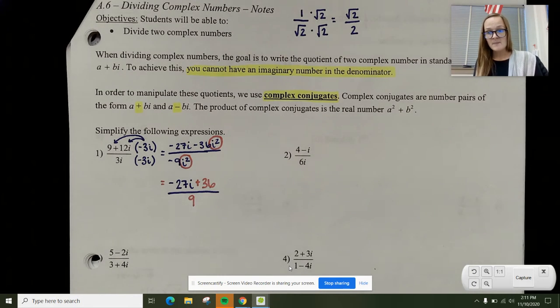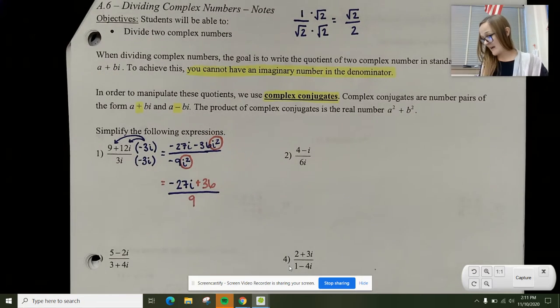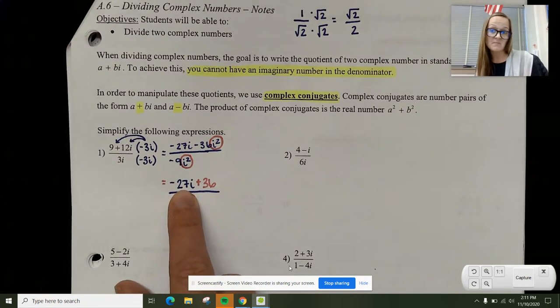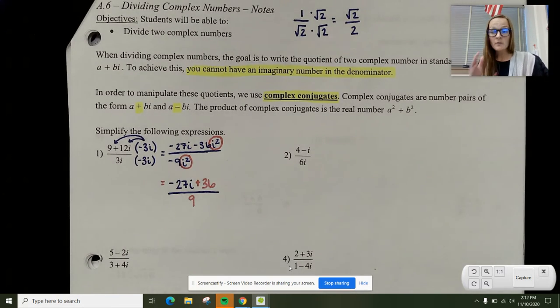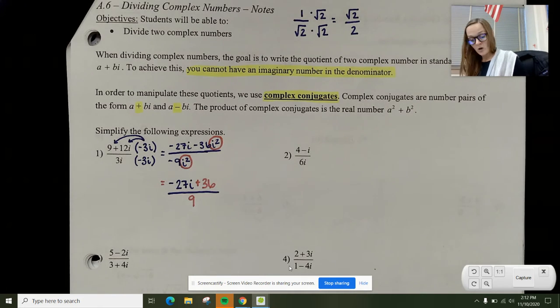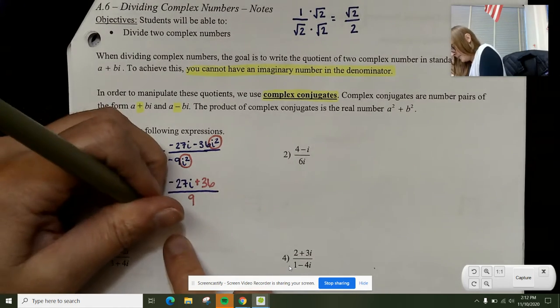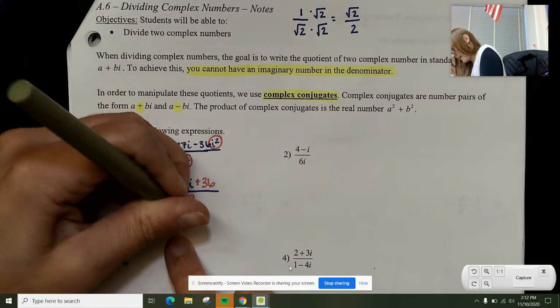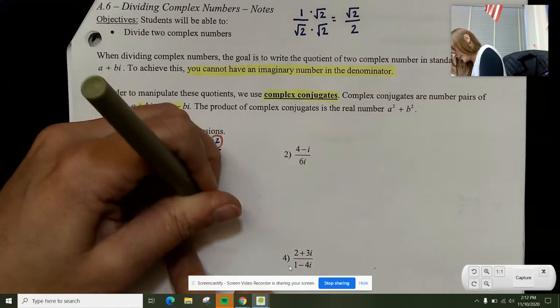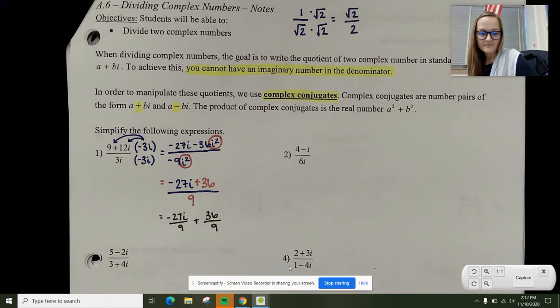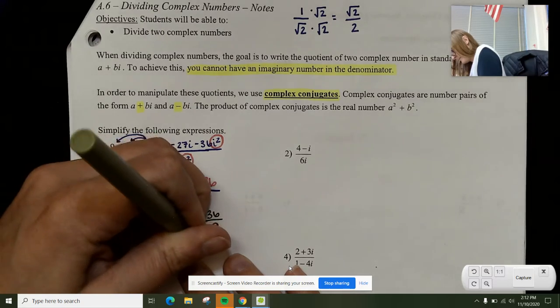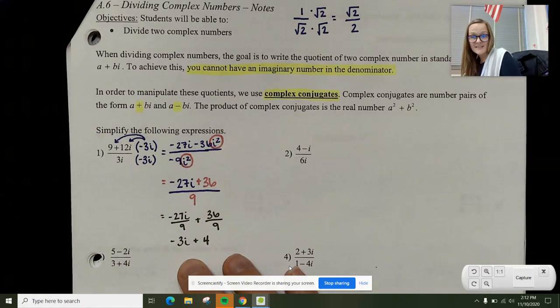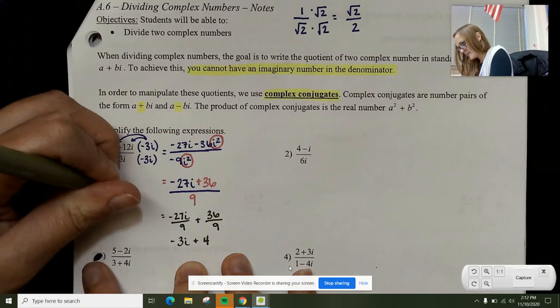Keep in mind, my goal is to get this to look like a plus bi. Currently, I have something that looks like bi plus c over a over c. I want to simplify this by splitting it up. I'm going to have negative 27i over 9 plus 36 over 9. Negative 27 over 9 is negative 3, and 36 over 9 is 4. If I want to put this in standard form, I've got 4 minus 3i.